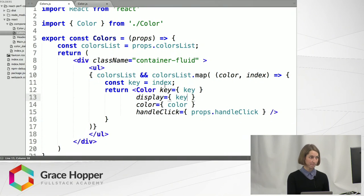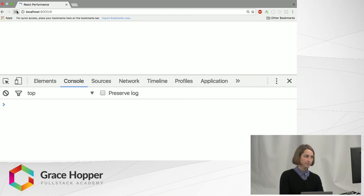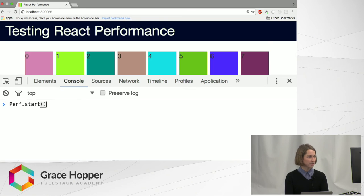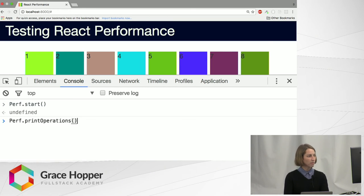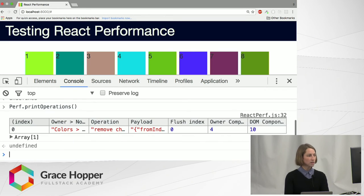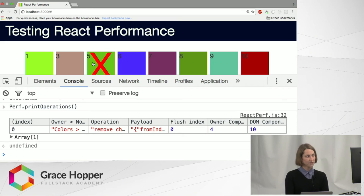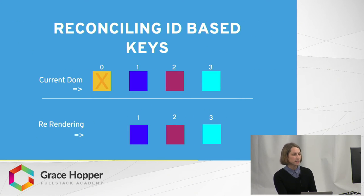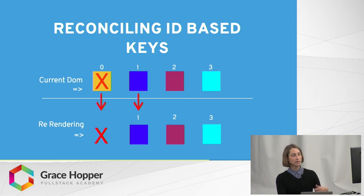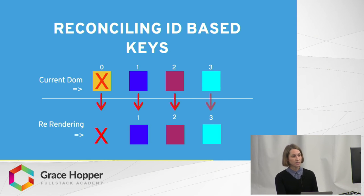Lastly, let me show you what happens if we use the ID as the key — and spoiler alert, this is our best case scenario. perf.start, I click to delete the first element, perf.stop, then perf.printOperations. We're down to one DOM operation, and it's feeling fast. In this case, the user deletes the first element; React says, is there a node with key value 0? Doesn't find it, removes it, moves on, and matches one to one — the color hasn't changed because our array hasn't been reordered. That's why we're seeing only one DOM manipulation.